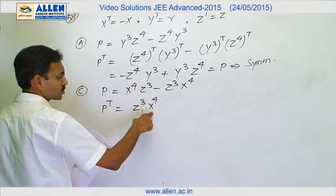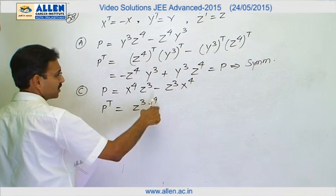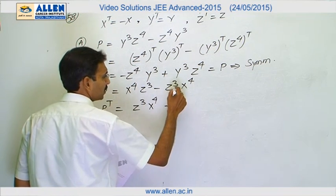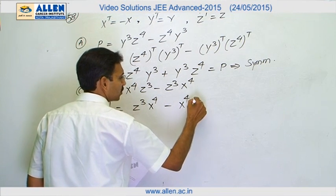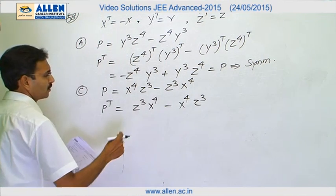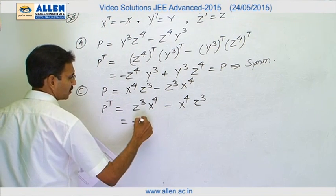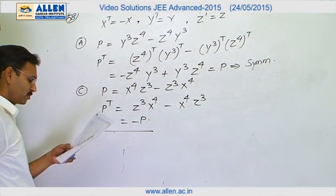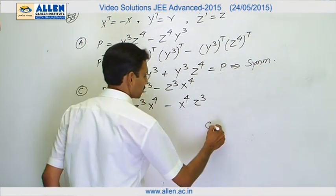This gives us Z^3 X^4. Now, Z is symmetric. This is skew symmetric but even power. Therefore, there is no change. Similarly, here it will become X^4 Z^3. We can see it is minus P. It means it is skew symmetric. So C and D both are correct options.